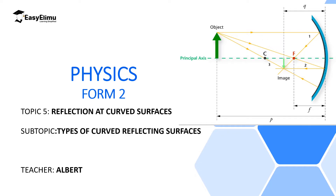In this new topic, reflection at curved surfaces, we are going to discuss light traveling in a straight line and how it interacts with curved mirrors or curved surfaces. We will discuss three important curved mirrors: concave mirrors, convex mirrors, and parabolic mirrors. We'll also see their applications in daily life, like side mirrors, shaving mirrors, dentist mirrors, and much more. My name is Albert, and I hope you will enjoy the lesson and the topic in general.